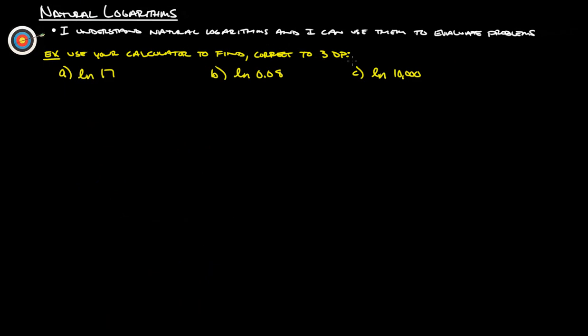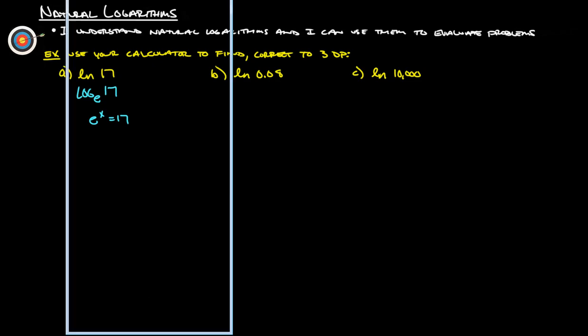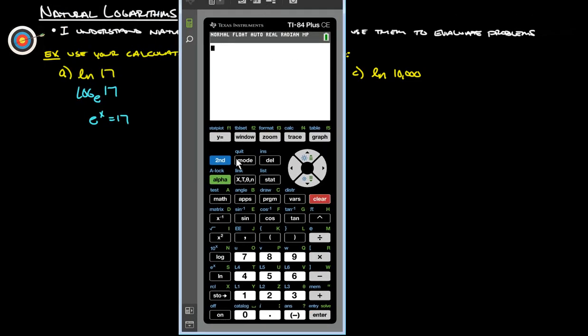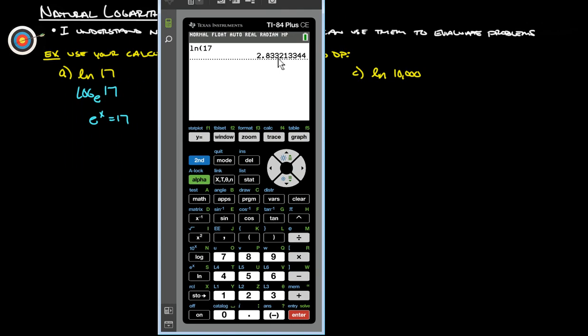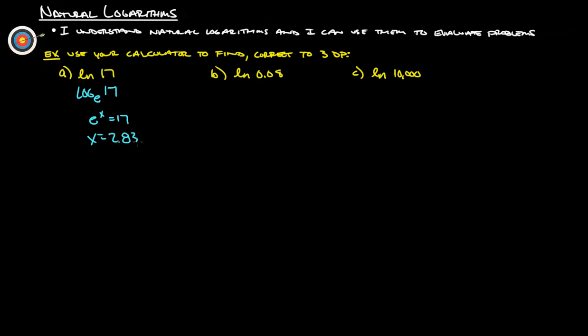Next example. Use a calculator to find, correct to 3 decimal places, LN of 17. And just so you know, this is the same thing as log base E of 17. So really what this is asking us is E to what power gives us 17. So if we do that on our handy-dandy calculator, we will simply just do LN of 17. And that gives us 2.833. So X equals 2.833. So that means E to the 2.833 should give us 17.